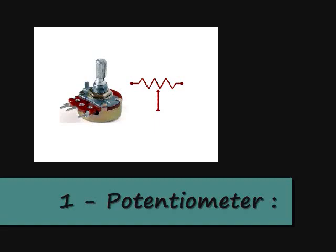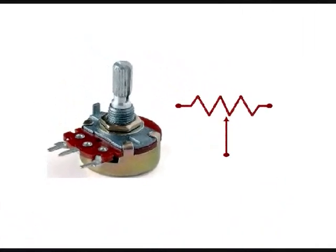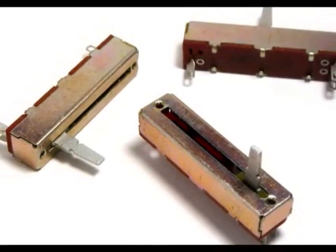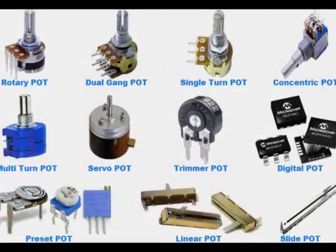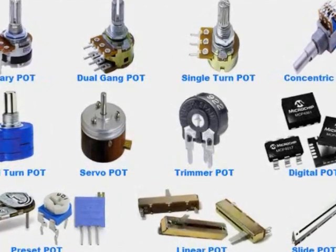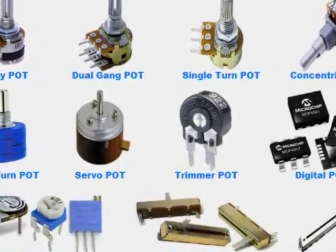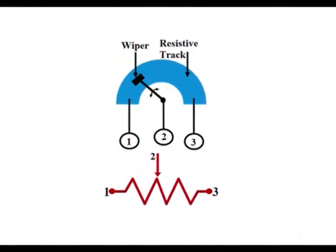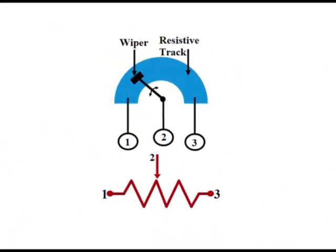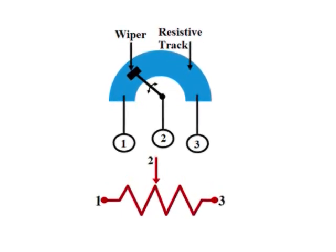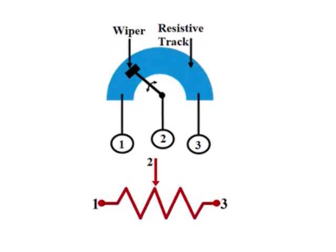The potentiometer has three legs, two of which are fixed on the sides. These two bases are connected to a resistance element whose value is equal to the nominal value of the resistance. The middle leg is also connected to a movable axis that moves on the resistance element and changes the resistance between the middle leg and the two legs on the sides. A potentiometer is used to reach the desired potential.